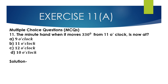Question number 11 — Multiple Choice Question: The minute hand, when it moves 330 degrees from 11 o'clock, is now at? The options are: 9 o'clock, 11 o'clock, 12 o'clock, and 10 o'clock.